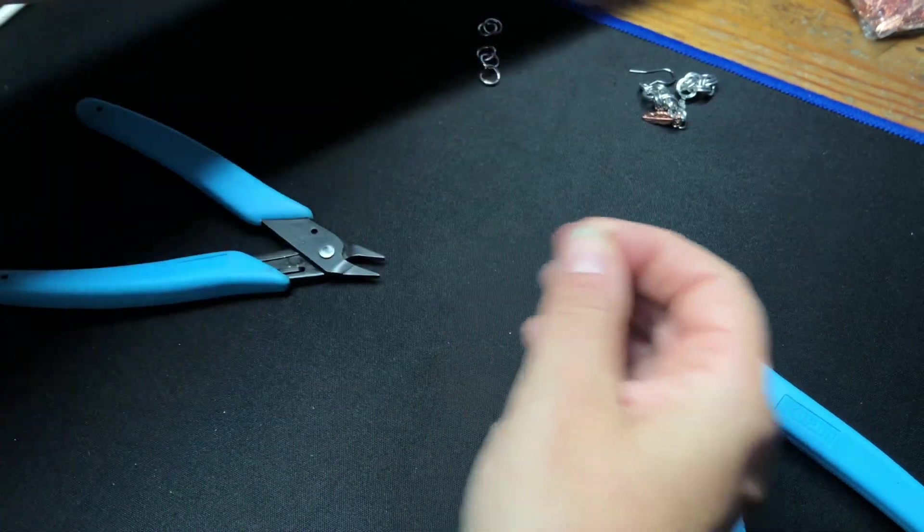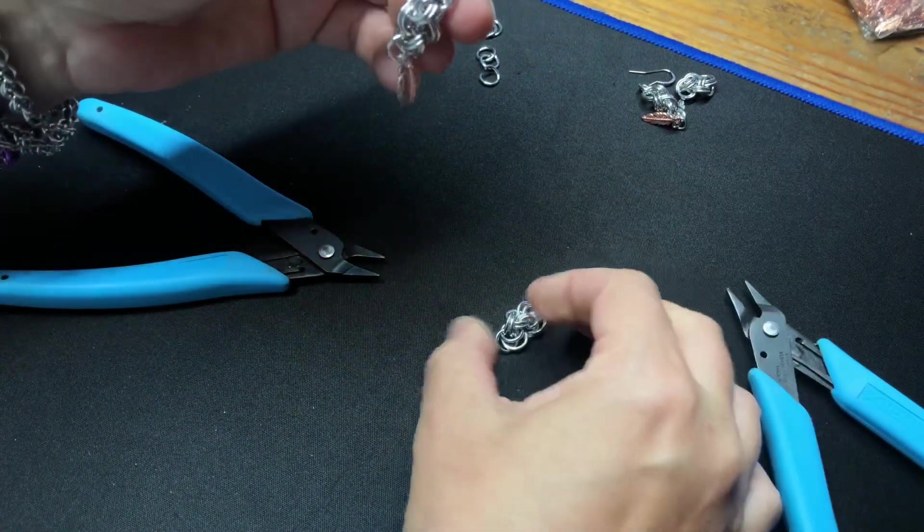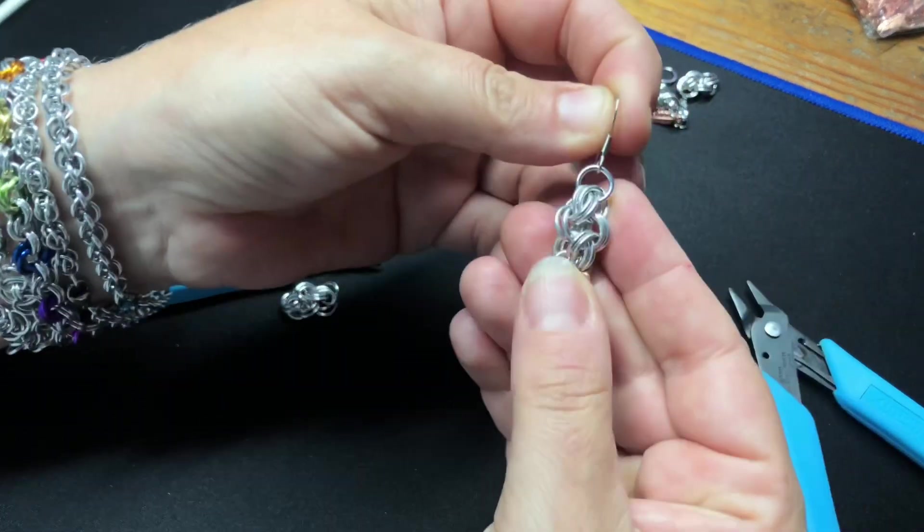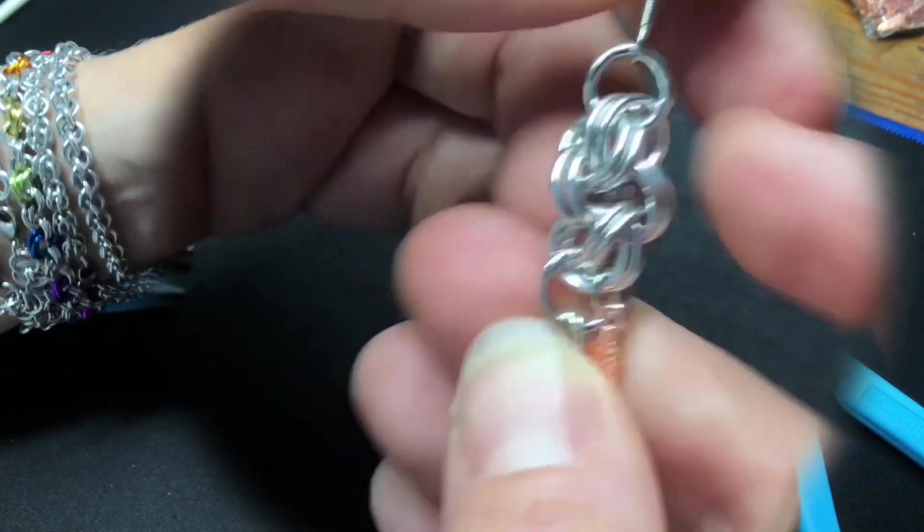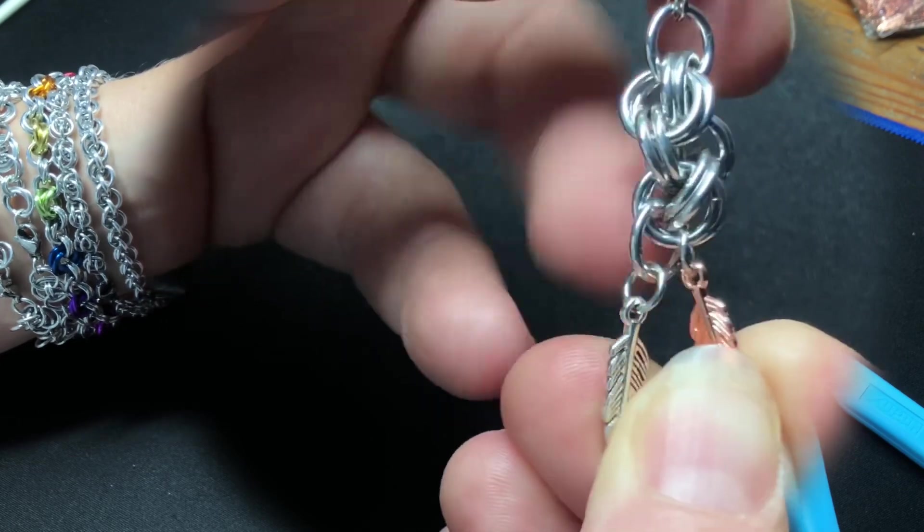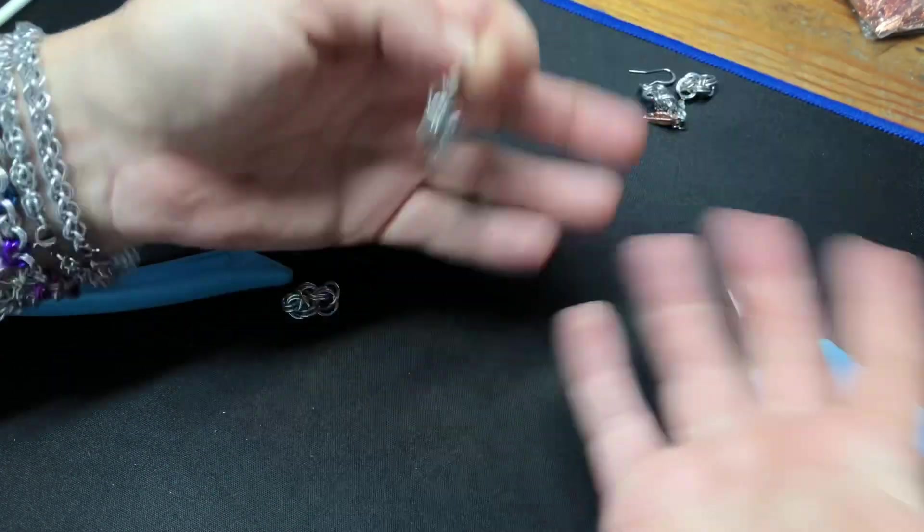So now what you can do, as I've done with this one, is put an ear hook in that one and then dangle pretties off the bottom.